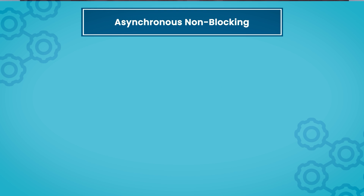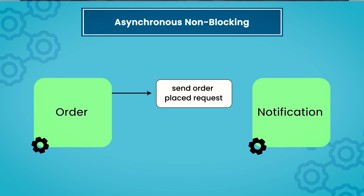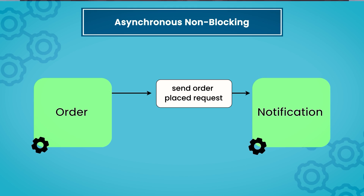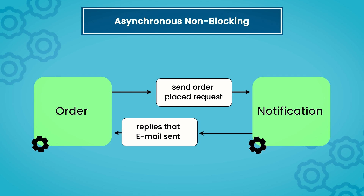For asynchronous non-blocking, we have an order service and a notification service. The order service sends an event — for example, a customer has placed an order — to the notification service and does not wait for a reply. Notification service will attend to that event as per its processing. Once it is done, it sends a response back to the order service, which then acts on that reply. This mechanism is a request-response implementation of asynchronous non-blocking.